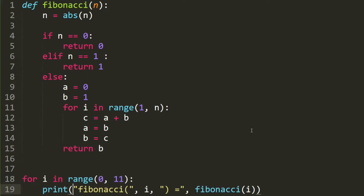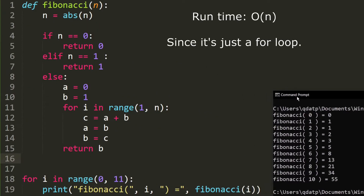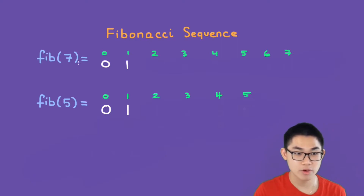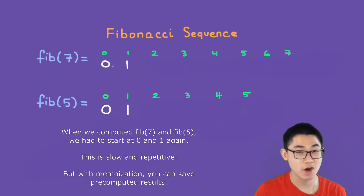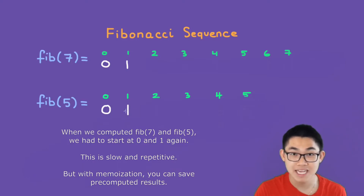Let's test our program — we'll find the first 10 numbers in the Fibonacci sequence. You can find the first 1 million numbers if you want; just change the number. As you can see, the first 10 numbers are 0, 1, 1, 2, 3, 5, 8, 13, 21, 34, 55. Our program works correctly. One thing to point out is that when we compute the 7th number and the 5th number, we always have to restart from the beginning — we restart at 0 and 1 again. This is slow, so there turns out to be a better way.